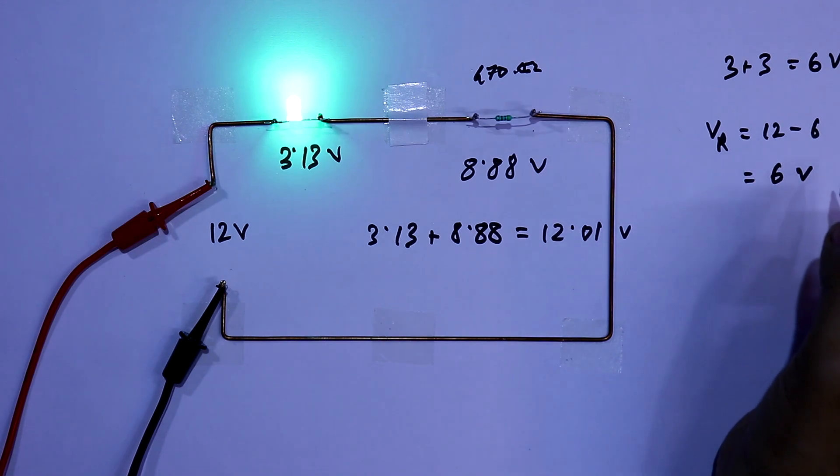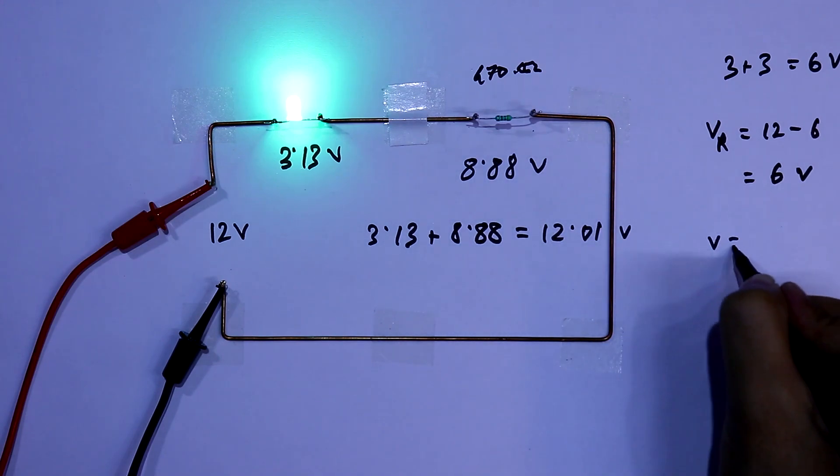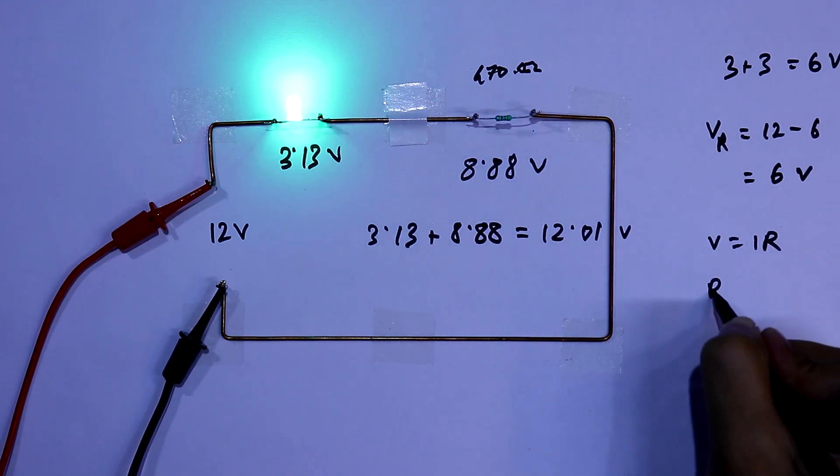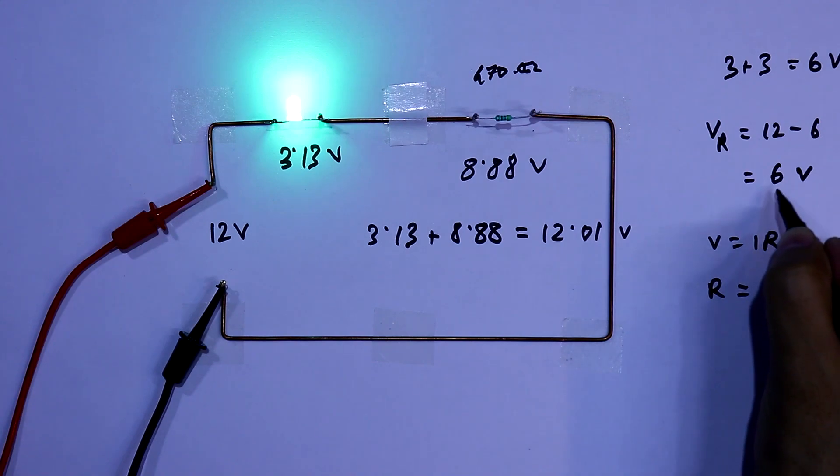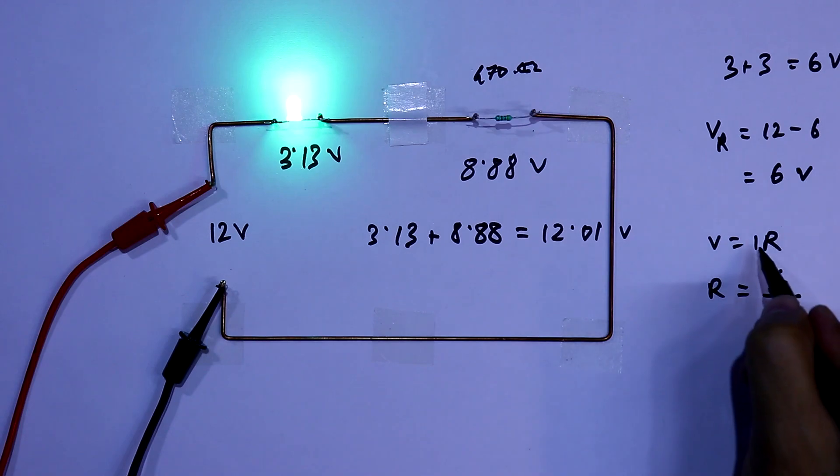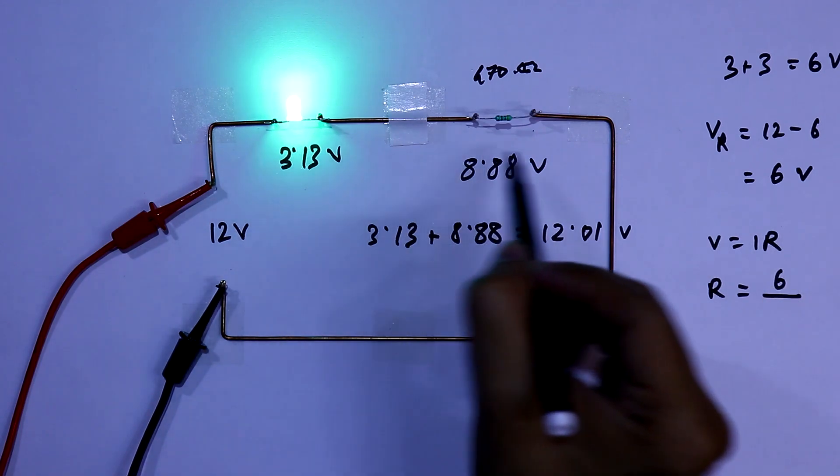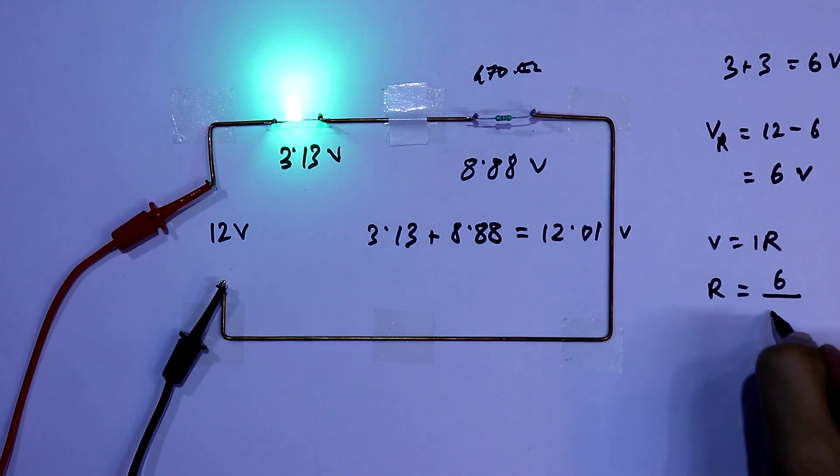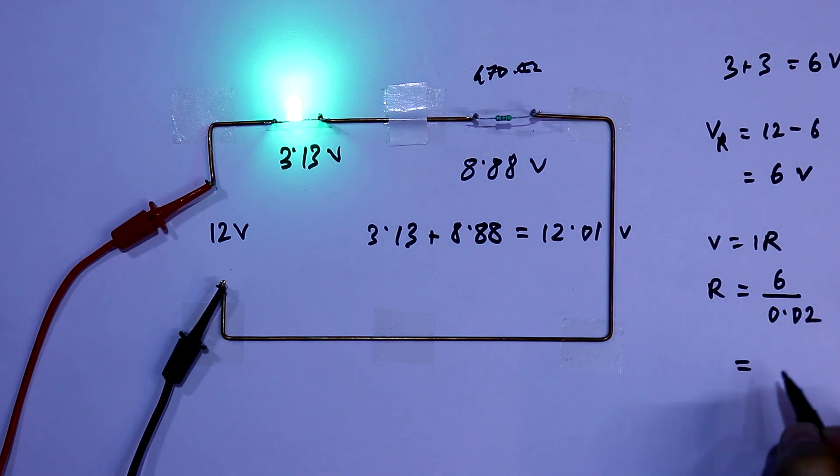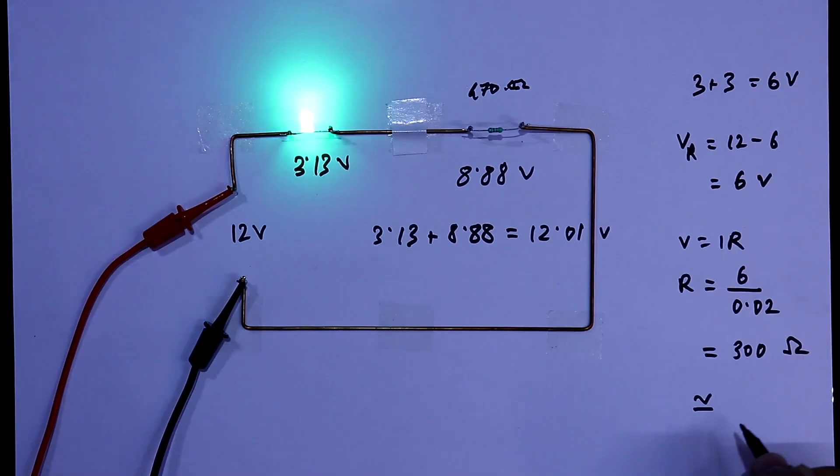So we have to drop a voltage of 6V. V equals IR, so R equals V by I. We have to drop 6V, so 6 by I. Current will be the same because all are connected in series. So it is 20mA or 0.02A. It is 300 ohms.